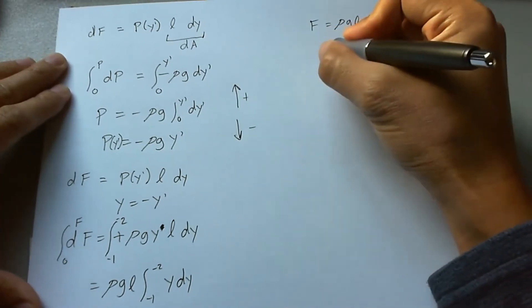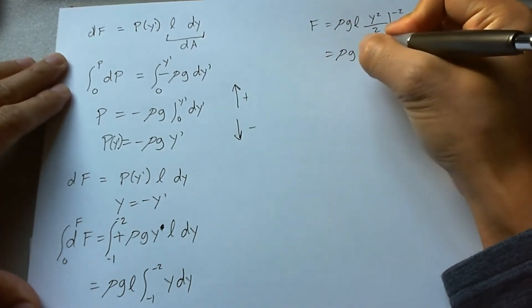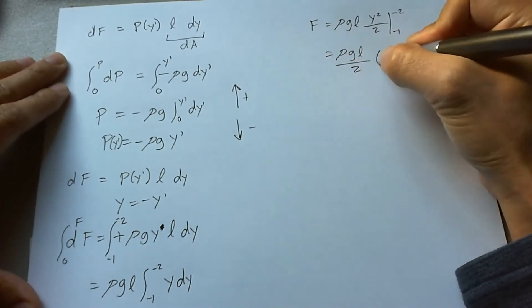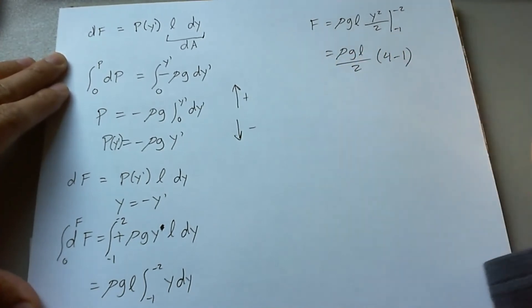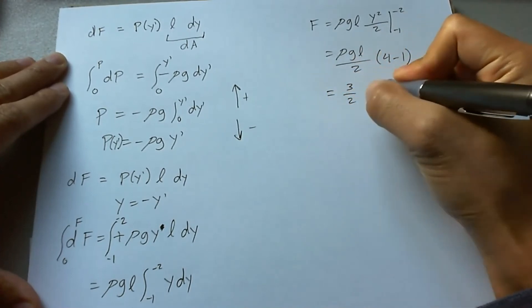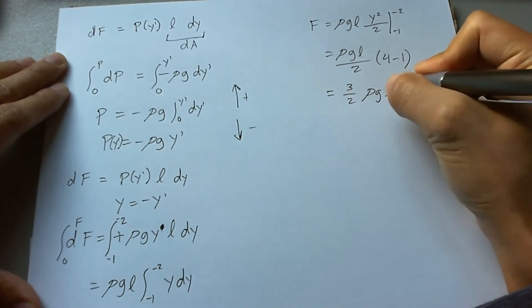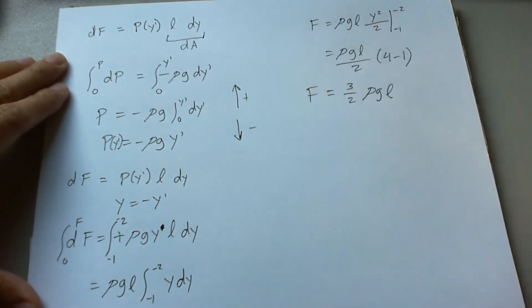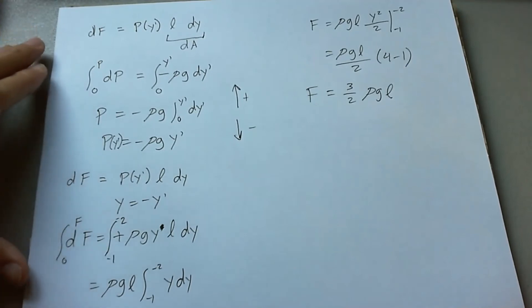And that's going to come out to be ρgL/2, 4 - 1. And then this all becomes positive 3/2 ρgL. And that's the force function for the window at a particular depth.